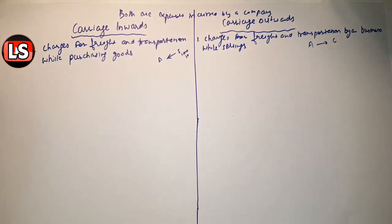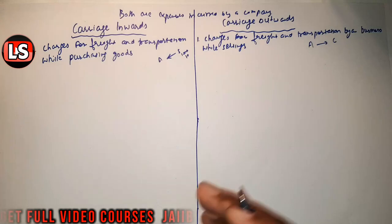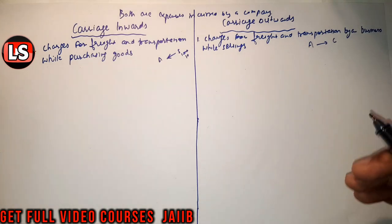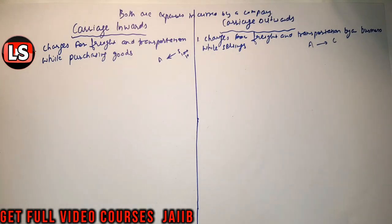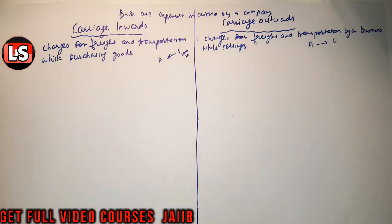So basically both are expenses, both are charges incurred on freight and transportation. The transportation charged on goods you are purchasing from your supplier is carriage inward, and when that same or any goods are being sold to a customer — if the freight and transportation cost is being borne by the business — then that will be known as carriage outward.